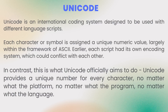ASCII code was developed for the English language, so what happens to other languages? That is why the Unicode system was created. Unicode is an international coding system designed to be used with different language scripts. Unicode provides a unique number for every character, no matter what the platform, program, or language. With this we conclude the Unit 1 Chapter on Number Systems. In the next video we will discuss calculating file sizes and the time to transmit over media. Good luck!